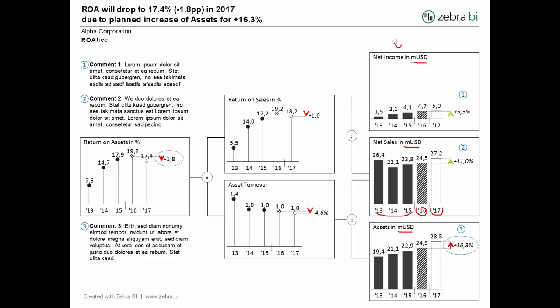For percentages and index KPIs like return on sales or asset turnover, we use a different shape: the so-called pin chart or lollipop chart. When you see columns, you understand it's financial data in currency; when you see pins and dots, you understand it's a percentage. The arrangement and design of charts on a page can vary, and this particular layout uses the idea of a tree — like a return on assets DuPont scheme.